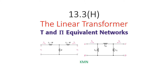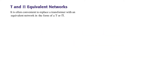Bismillahirrahmanirrahim. In this short video we will be talking about T and Pi equivalent networks as part of the linear transformer. As you can see in the figure, this is the T network and this is the Pi network. It is often convenient to replace the transformer with an equivalent network in the form of a T network or Pi network.